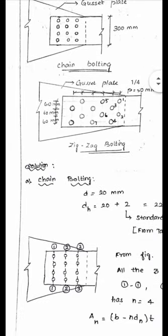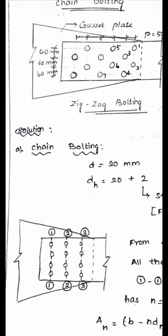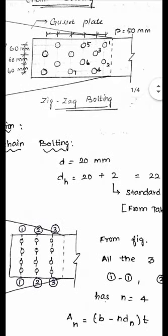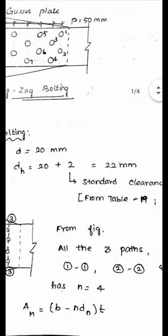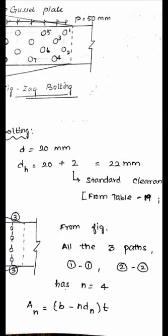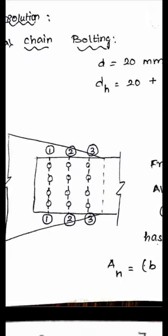First part of the problem: chain bolting, where diameter of the bolt D is 20 mm. I will calculate the diameter of the hole by adding 2 mm for the standard clearance as per table 19, page number 73. I got the diameter of the hole as 22 mm. Here I have marked 3 different paths: path 1 to 1, 2 to 2, and 3 to 3. All 3 paths have the same number of bolt holes.